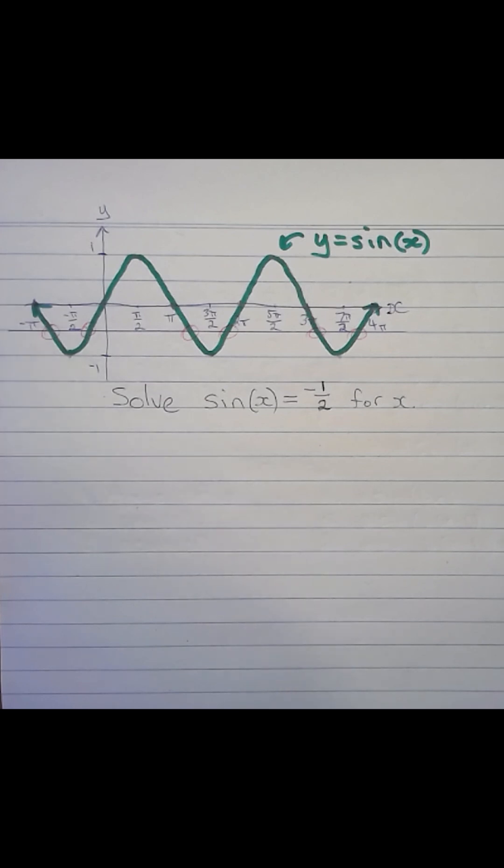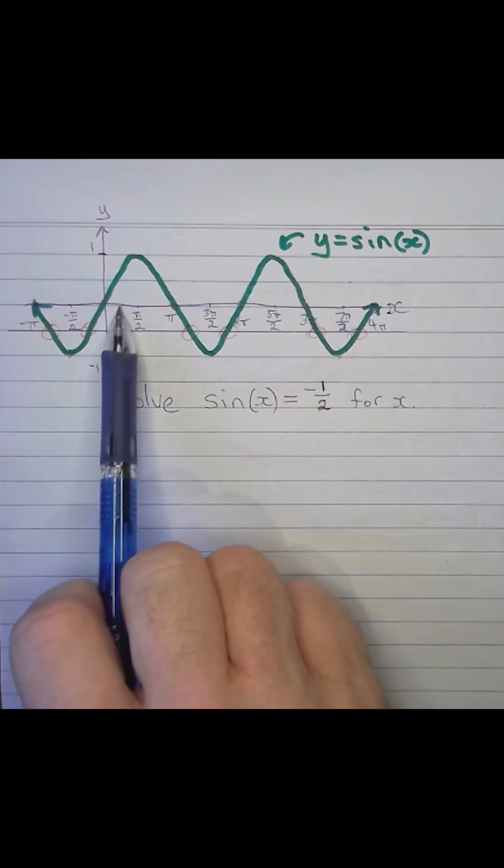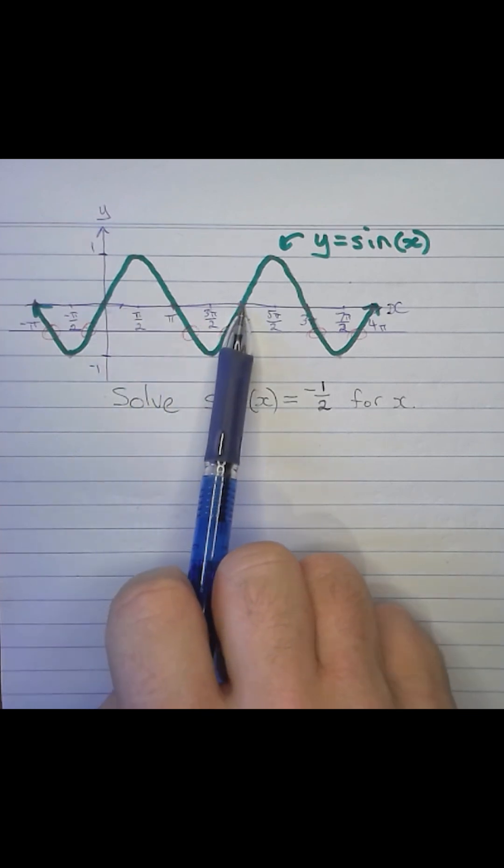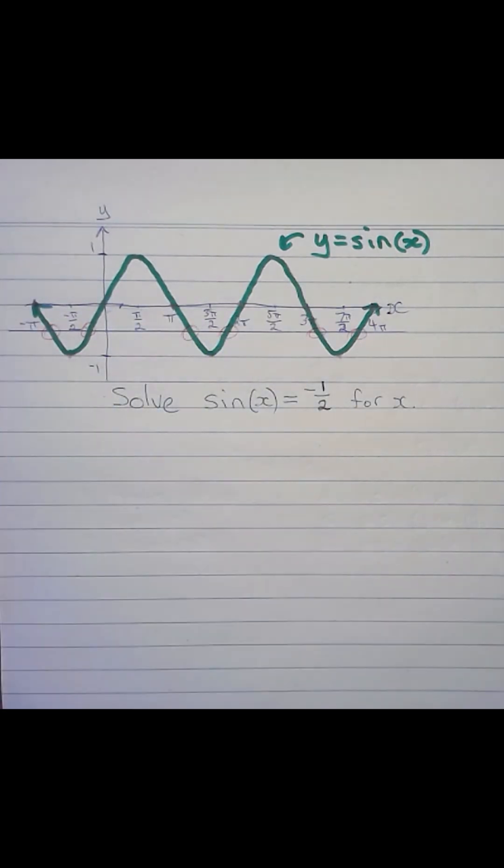All we have to do is find the solutions within one period of the sine curve, for example, 0 to 2π, or perhaps -π to π, and then they're just going to repeat themselves every 2π, because sine repeats its values every 2π.